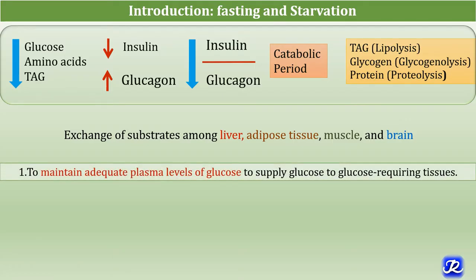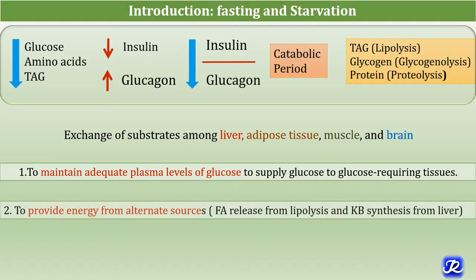The first priority is to maintain adequate plasma levels of glucose to supply glucose to various glucose-dependent tissues like brain, RBCs, adrenal medulla, and retinal cells. The second priority is to conserve protein and to provide energy from alternate sources like fatty acids and ketone bodies.